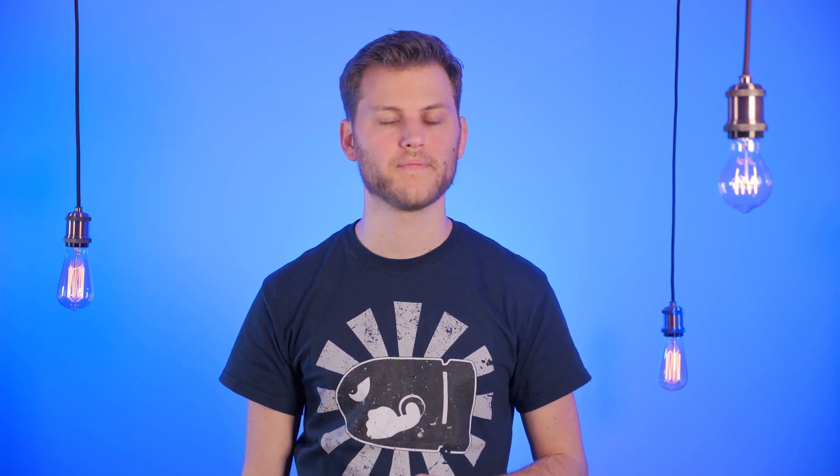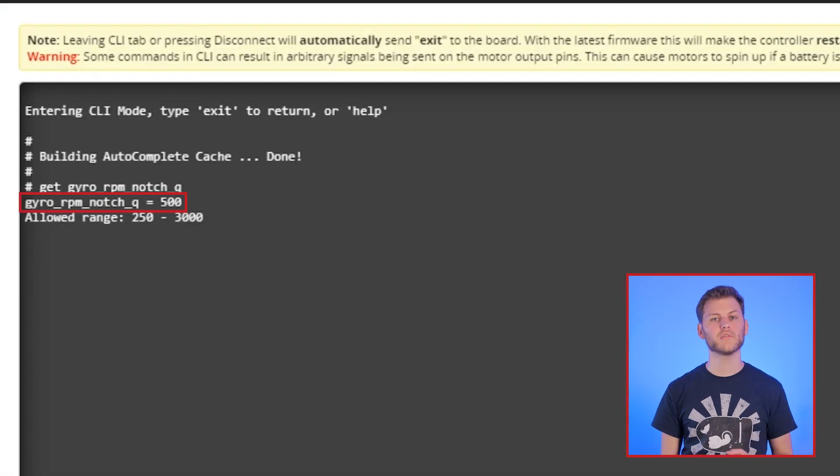I tried a comparison on a cinewhoop that still has a lot of noise after filtering. On the left, the Q is set to 500 and on the right, 250. We can see that there is less noise on the second test and it would be very hard to get rid of that with other filters. But in general, the default value of 500 is once again a pretty good compromise.